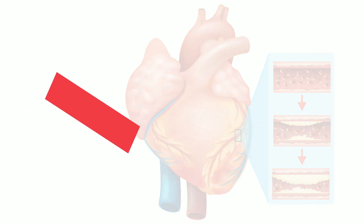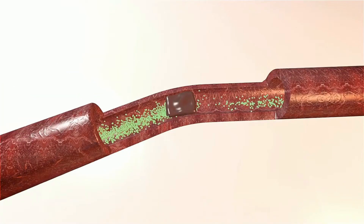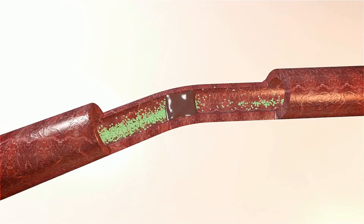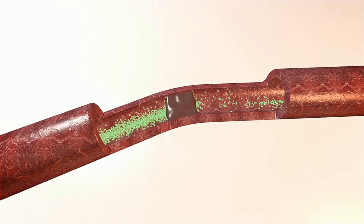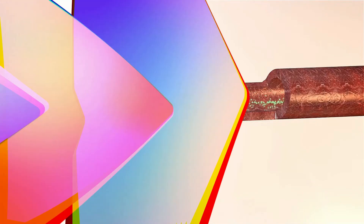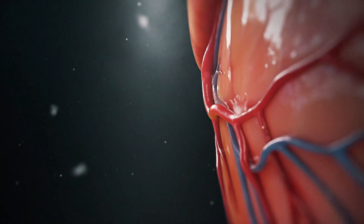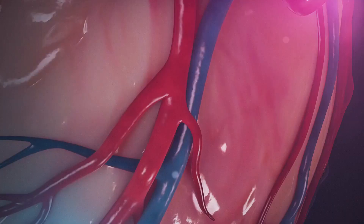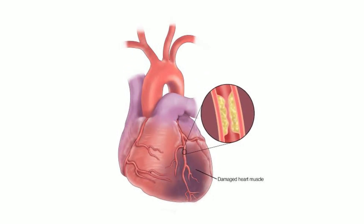When plaque, a waxy substance, accumulates inside the coronary arteries which carry blood to the heart muscle, problems arise. Years may pass before the blood flow is blocked, yet it will eventually result in a heart attack or failure. Plaque, a mixture of cholesterol, fat, and other chemicals, begins to adhere to the blood vessel walls as early as childhood.